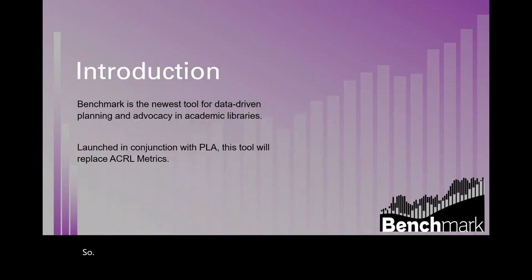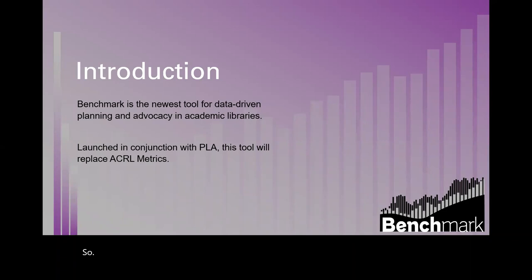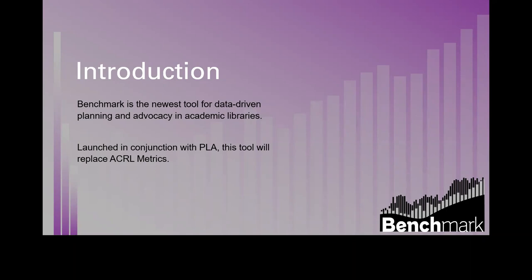To set the stage: for the past several years, ACRL has been working with our sister association, the Public Library Association, to develop this new platform that would allow both associations to field surveys as well as to provide access to the data we both collect in a timely manner. This tool is designed to help academic libraries use the survey data for benchmarking, understanding trends, advocating for better resources, assessment projects, and even individual research. With Benchmark, you can analyze expenditures, staffing, collections, services, and other trend data over time using customized comparison groups.